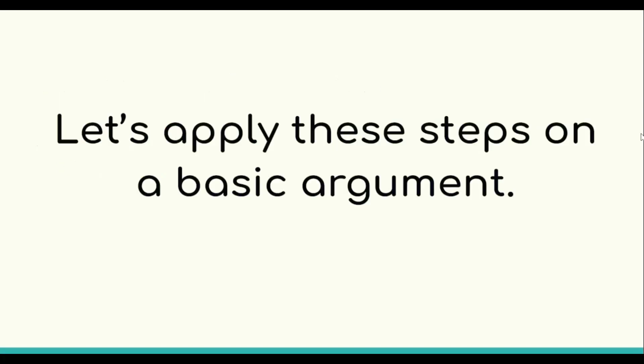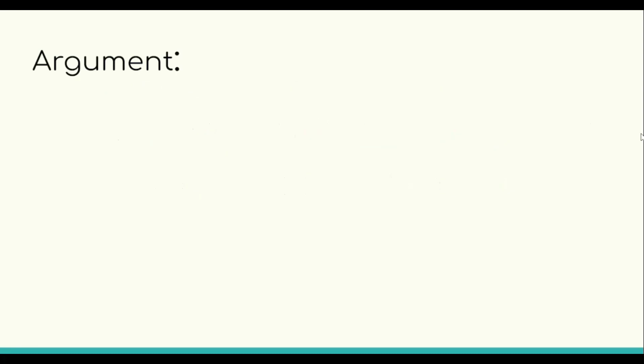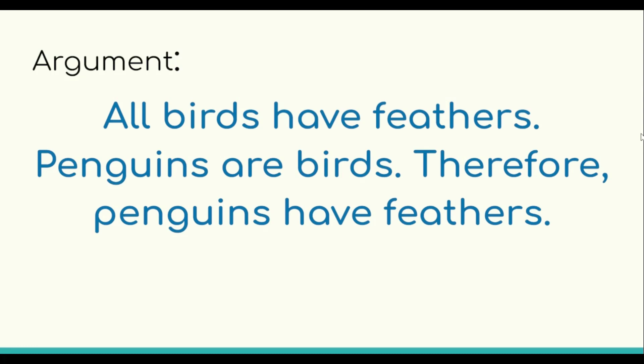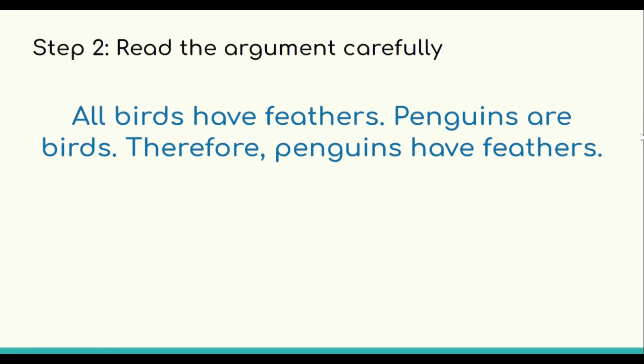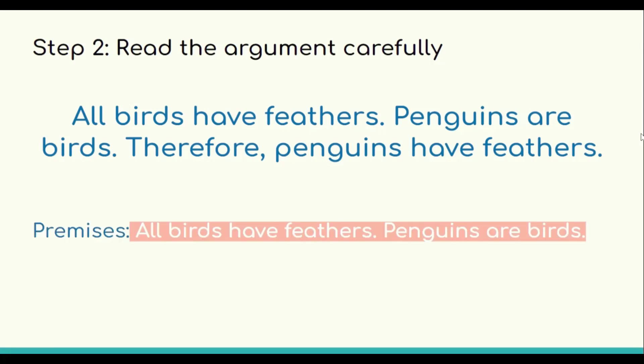Let's apply these steps to a basic critical thinking question. The argument is: 'All birds have feathers. Penguins are birds. Therefore, penguins have feathers.' We're already in conclusion-hunting mode, so we skip to step two: read the argument carefully. The author is making a claim about penguins — that since all birds have feathers and penguins are birds, penguins must also have feathers. The two premises are 'all birds have feathers' and 'penguins are birds.'